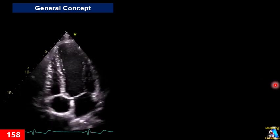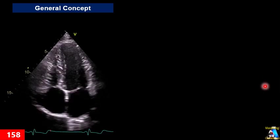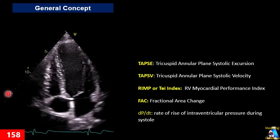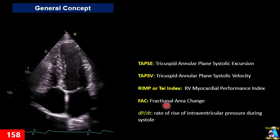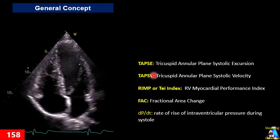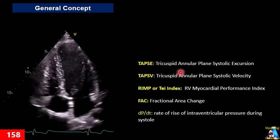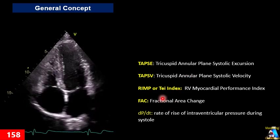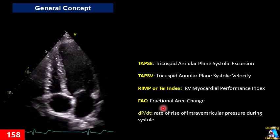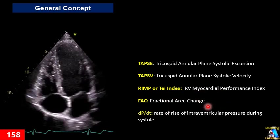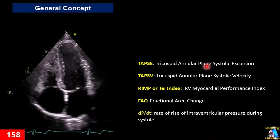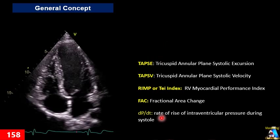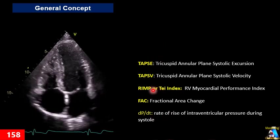With all this research, we have found different ways to evaluate the systolic function of the right ventricle. Among those, there are five parameters we can use. In the first part of this lecture I talked about fractional area change and dimensions. In this lecture I am going to talk about TAPSE, TAPSV, Tei index (RIMP), and dP/dt.